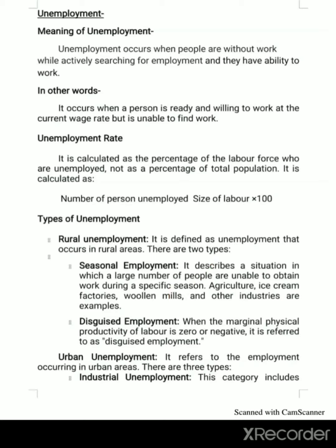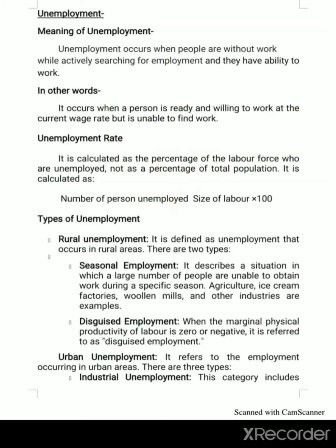Disguised unemployment occurs when the marginal physical productivity of labor is zero or negative. For example, a raw material shortage that halts production can lead to this situation. This kind of situation is called disguised unemployment.